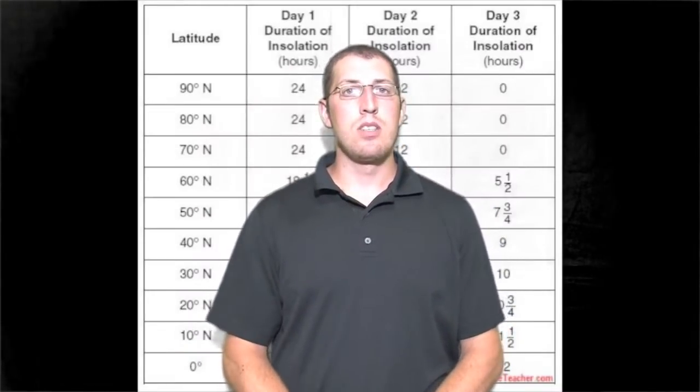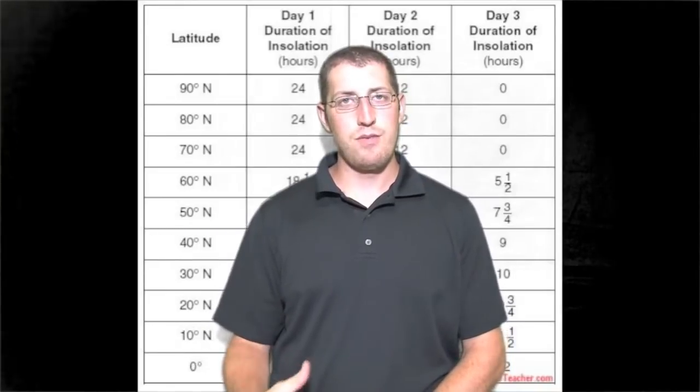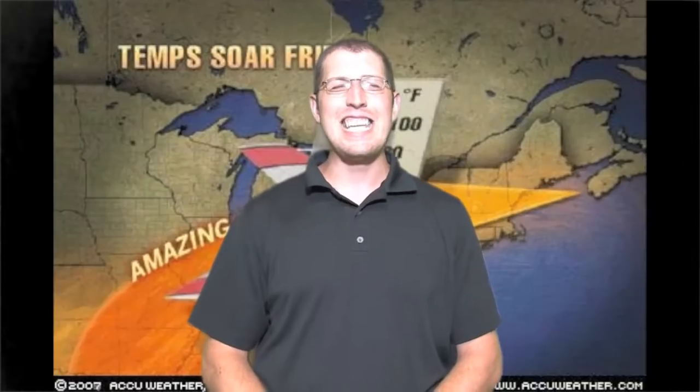At different latitudes, you get different temperatures. These different temperatures cause uneven heating in the earth. You get warmer temperatures by the equator and cooler temperatures — that's uneven heating. This uneven heating causes the earth to become a gigantic engine that produces the infinite variety of weather. That's pretty much how weather is caused on earth: uneven heating by the sun.